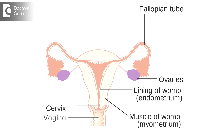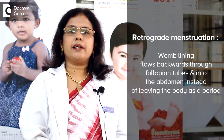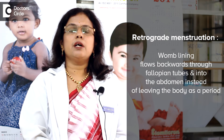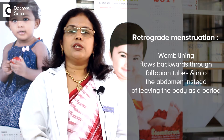The infection can spread due to two reasons. First, the cervix is open, thereby allowing the bacteria to enter from the vagina through the cervix into the uterus and tubes. The retrograde flow of menstruation can carry the bacteria from the vagina into the uterus, tubes and pelvic cavity, causing genital tract infection.